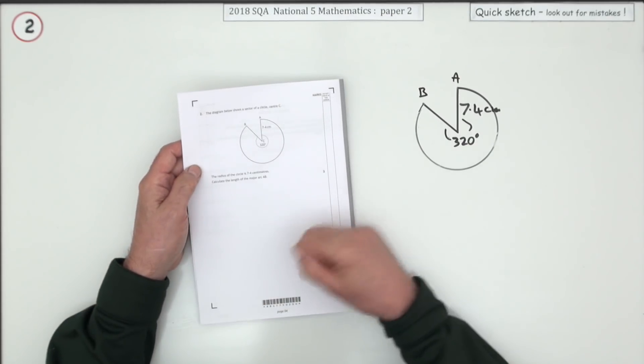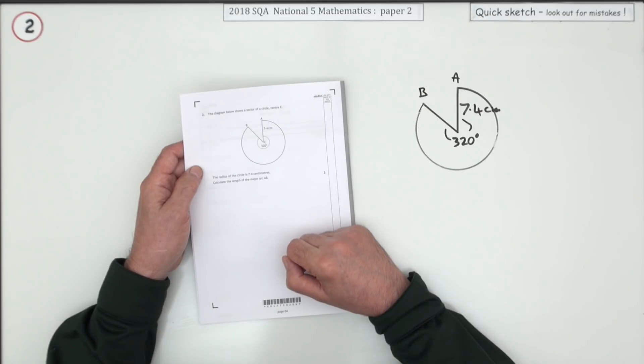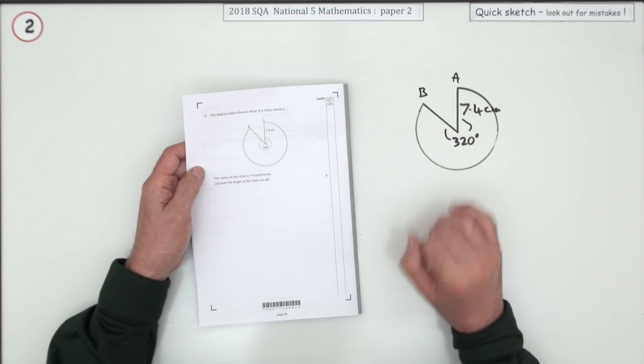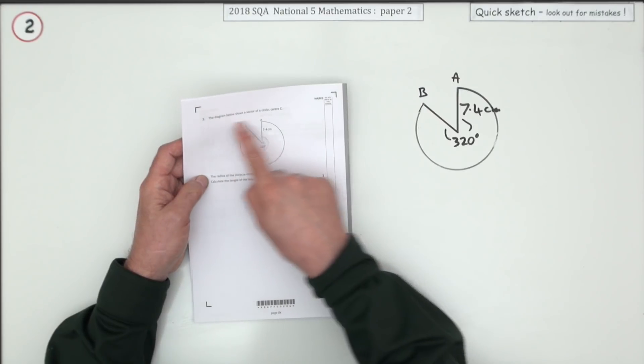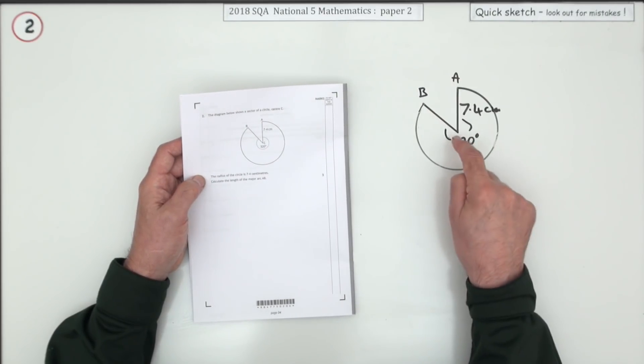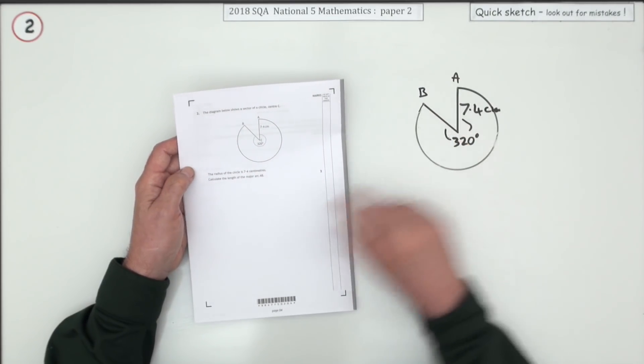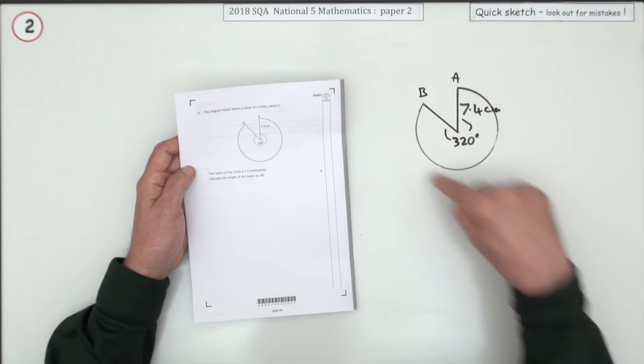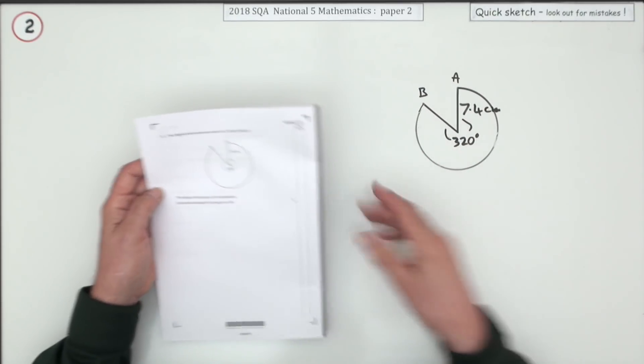Number two then. There we go. Slice of a circle. As soon as you see that picture you know it's fractions. Fractions of a circle. The diagram shows a circle centre C. The radius is 7.4. What's the length of the major arc? That's the big one. Well that's the angle you're giving anyway.